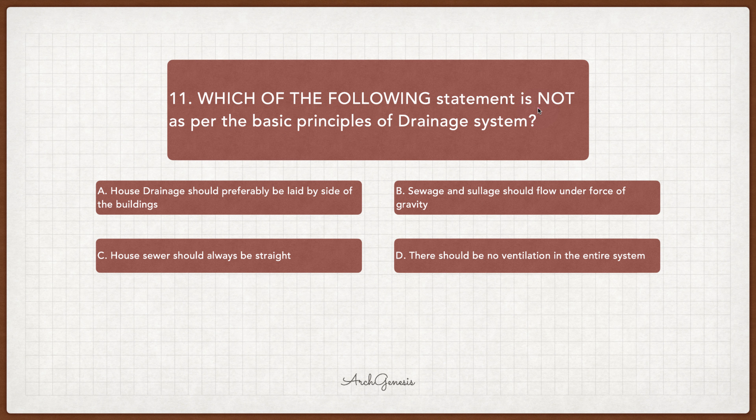Second option is, sewers and sludge should flow under the force of gravity. If there is a pipe or drainage system, it should follow gravity — it should always go from upside to downside. The third option is, house sewers should always be straight. And the fourth option is, there should be no ventilation in the entire system.